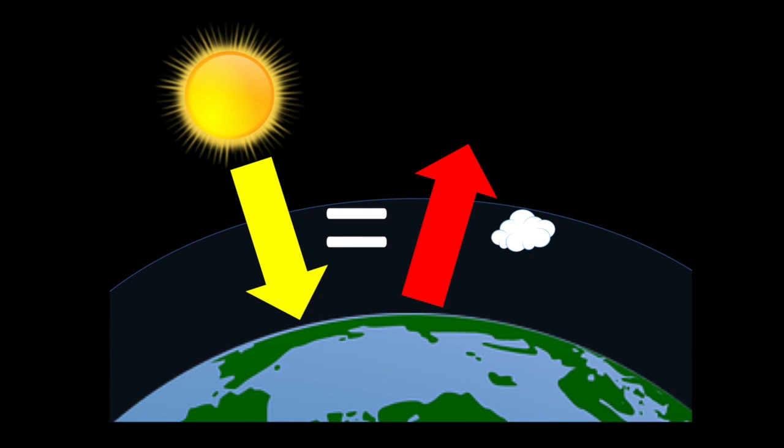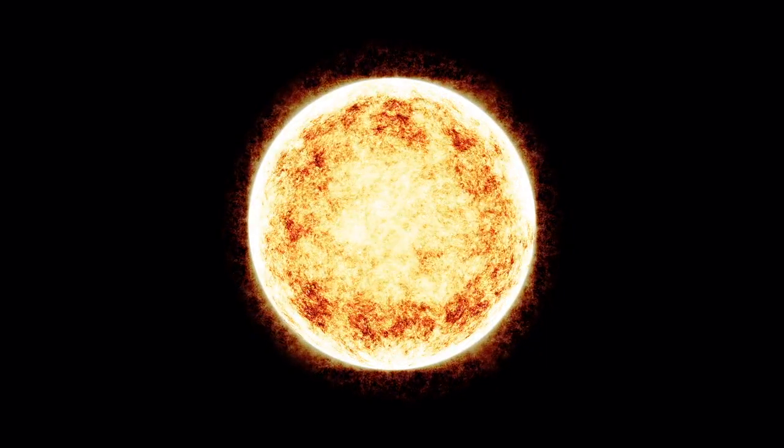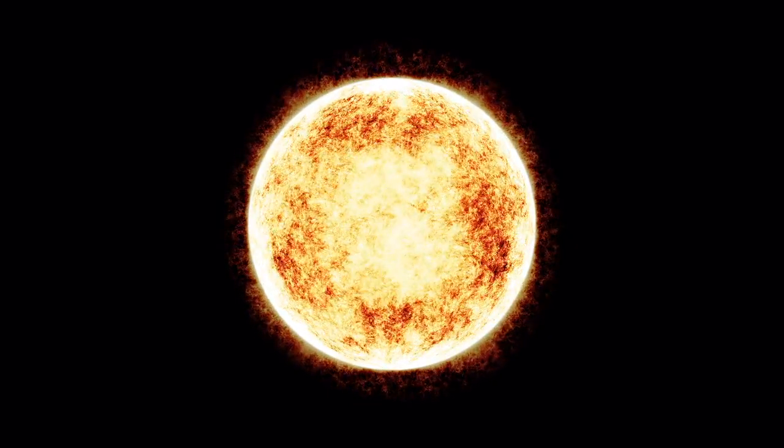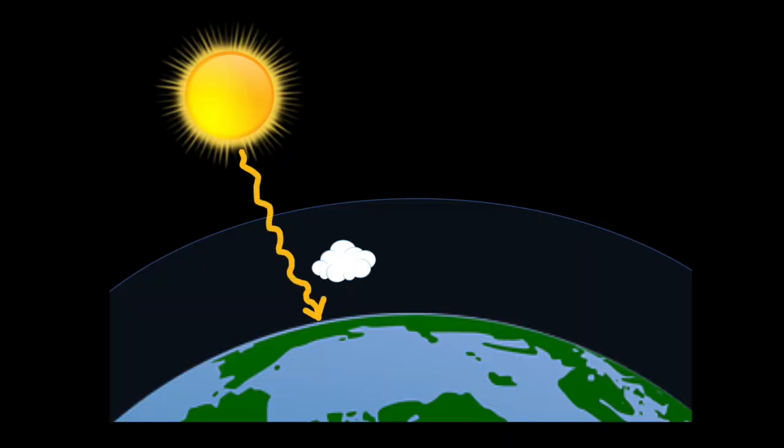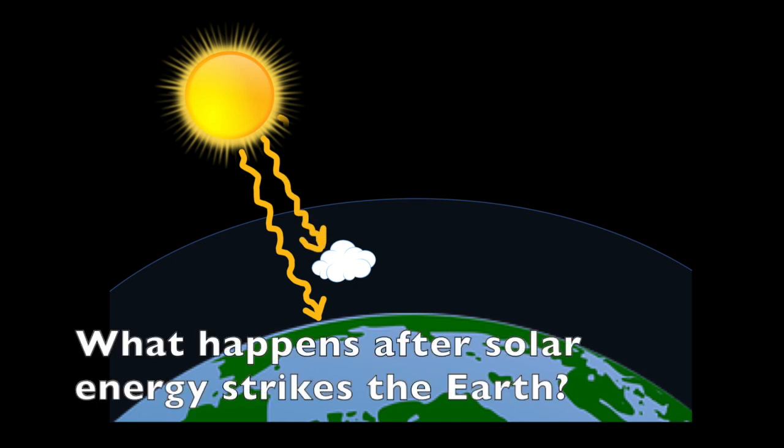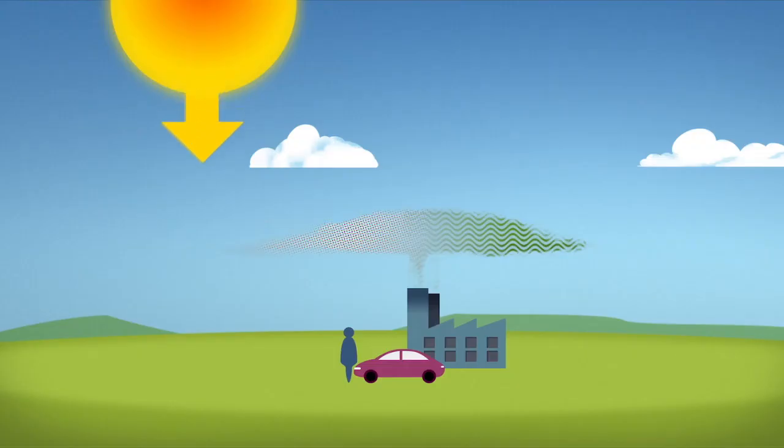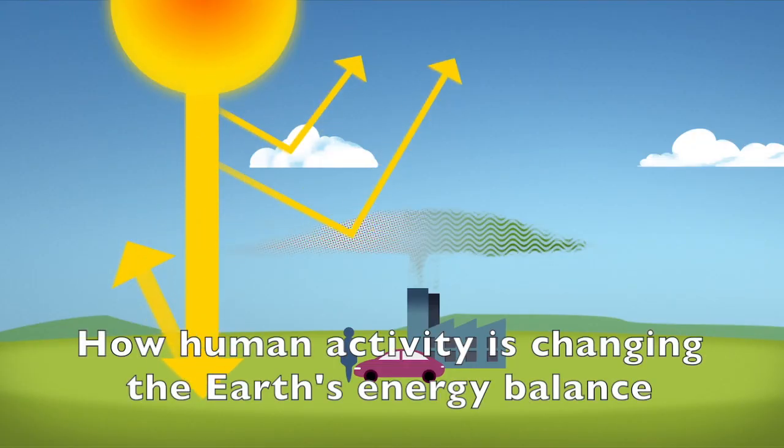In a previous video, we talked about some of the factors that determine how much energy gets to us from the Sun. In this video, we'll be talking about what happens after solar energy strikes the Earth or parts of the Earth's atmosphere. We'll also be talking about how human activity is changing the Earth's energy balance.